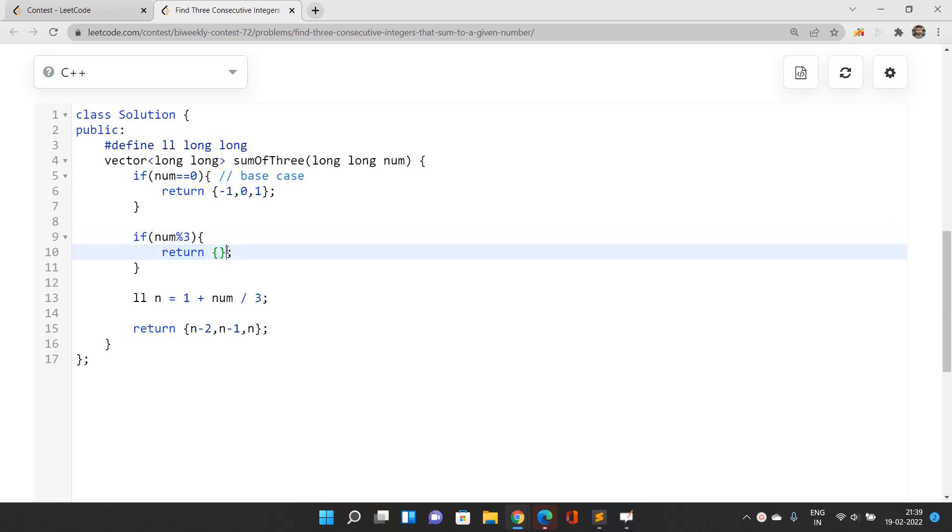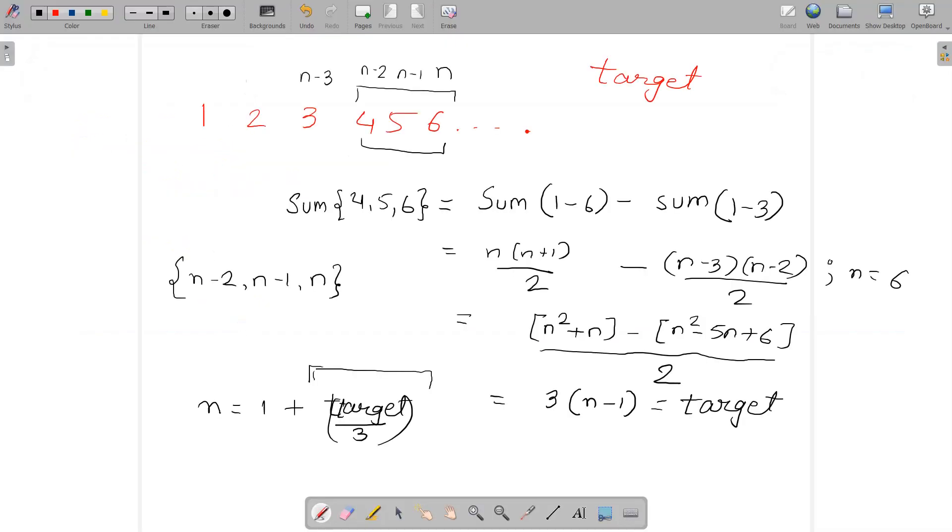Because we're not going to have any three consecutive integers that would give us the target value. Otherwise, find n which is 1 + num/3, since num is divisible by 3. The three integers are n-2, n-1, and n, because n is actually the extreme value of the three consecutive integers.